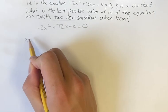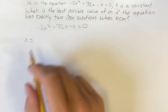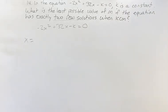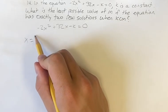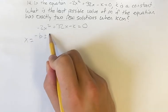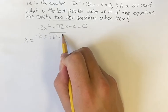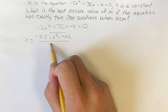So if we look at the quadratic formula to see what the solutions to this equation would be, you have x equals negative b plus or minus the square root of b squared minus 4ac over 2a.